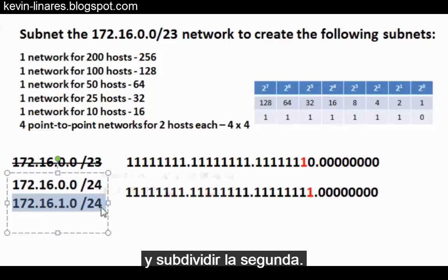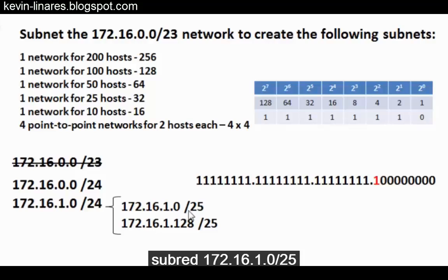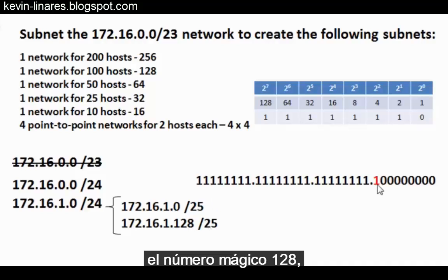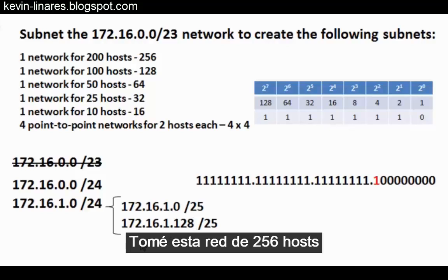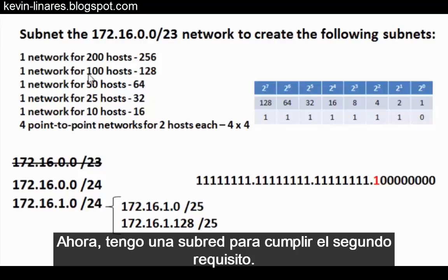To do this, I take the 172.16.1.0/24 subnet and change it from /24 to /25. So now I have the 172.16.1.0/25 subnet. This creates another subnet: 172.16.1.128. Both subnets have a magic number of 128, meaning the networks go up by 128. I've taken this one network of 256 hosts and subdivided it into two networks of 128 hosts each. I now have a subnet to meet the second requirement.